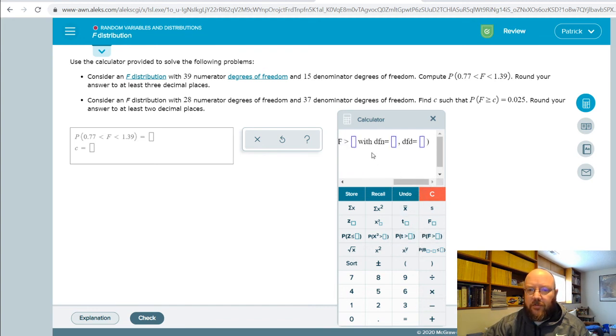And so the second one is f with 1.39 with 39 and 15. There we go. And so that's going to be 0.501.